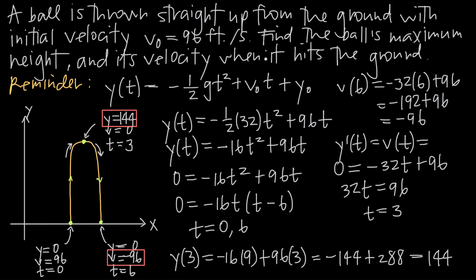Attaching units to our final answers: the maximum height is 144 feet, the highest point the ball attains. The velocity when the ball hits the ground is negative 96 feet per second. And that's how you use the position and velocity functions to solve a vertical motion problem.